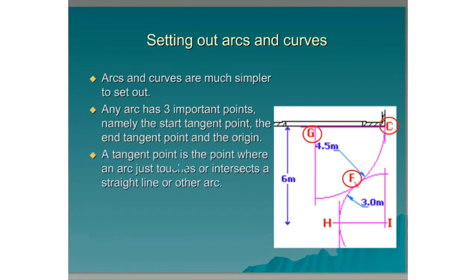A tangent point is a point where an arc just touches or intersects a straight line or other arc. In the drawing opposite, points C, F, and H are all tangent points.